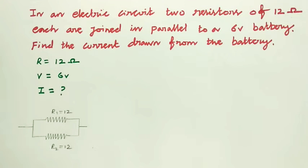In an electric circuit, two resistors of 12 Ohm each are joined in parallel to a 6 volt battery. Find the current drawn from the battery.